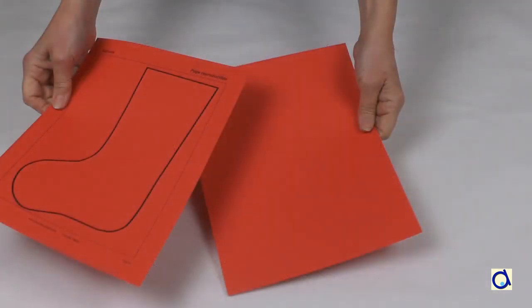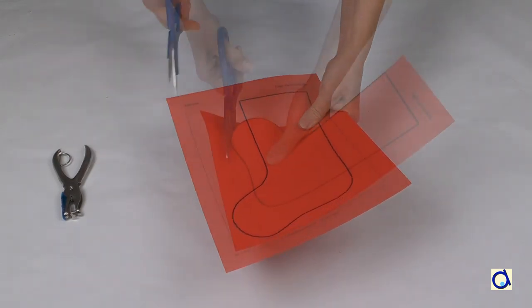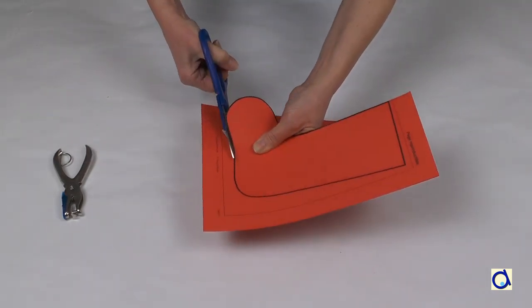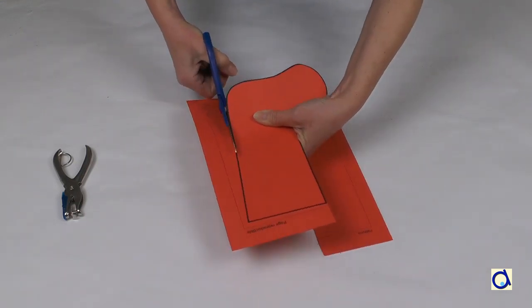You will find the patterns for the stocking itself and the fur trimming in the printable document. Start by printing the stocking on red construction paper. Take two sheets of red construction paper and cut along the outline of the stocking through the two layers of construction paper.